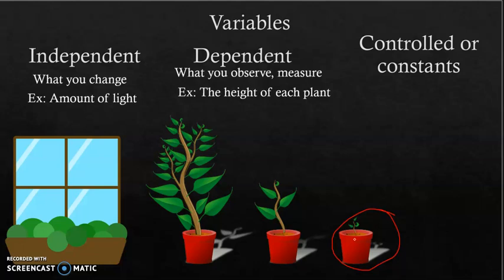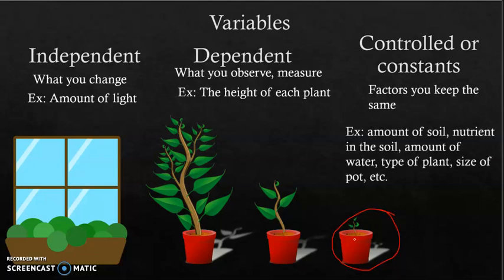My controlled variables or constants are the factors I keep the same. In this example, I want to keep everything the same except for the distance from the light — the amount of soil, the nutrients in the soil, watering them all exactly the same, using the same type of plant so they all grow at the same rate, and the same size of pot. Anything that could influence your results besides light, you want to keep the same. If I forgot to water plant number three, how would I know if it's because of lack of water or lack of light? You only want to change one variable.